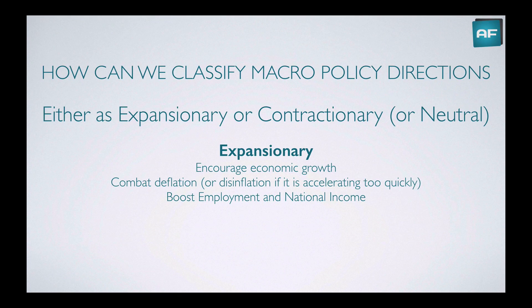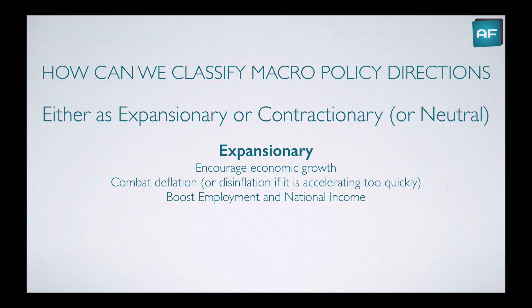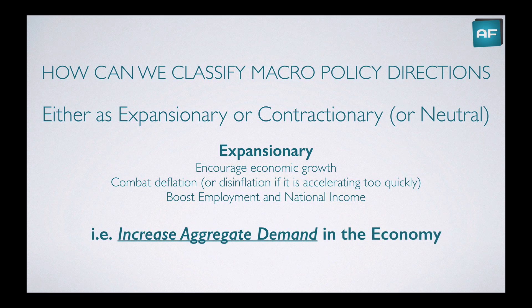So how can we classify macro policy directions? We'll either classify macro policies as expansionary, or contractionary, or even neutral. Expansionary policies encourage economic growth. They try to combat deflation when prices are falling, or disinflation — where inflation is still occurring but at a slower and slower rate. We'll also try to boost employment and national income through expansionary policies. Technically, these policies are trying to increase aggregate demand in the economy.